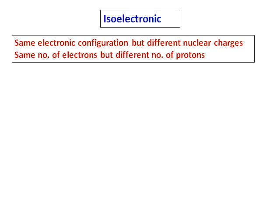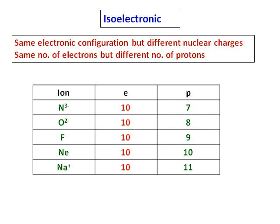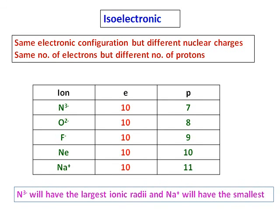The last concept in this video is isoelectronic species — elements or ions that have the same electronic configuration but different nuclear charges, meaning the same number of electrons but different numbers of protons. For example, N³⁻ has 10 electrons with 7 protons; O²⁻, F⁻, Ne, and Na⁺ all have 10 electrons, but the number of protons is 8, 9, 10, and 11 respectively. For isoelectronic species, N³⁻ will have the largest ionic radius due to the fewest protons, and Na⁺ will have the smallest ionic radius due to the most protons.